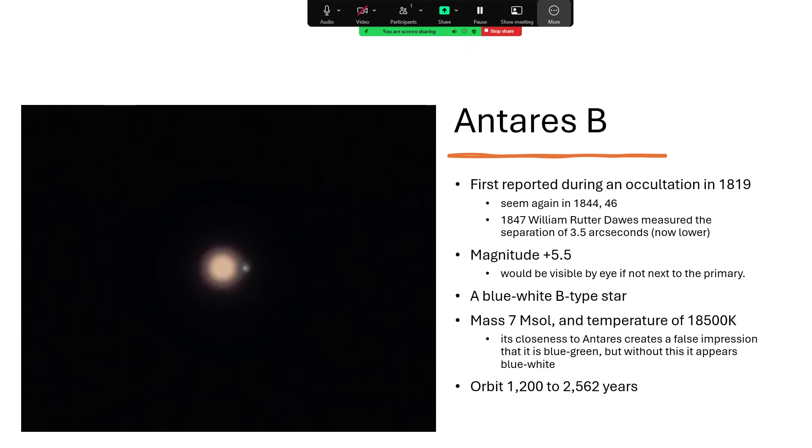And at that sort of level, you can understand why in just a couple of hundred years, it's quite difficult to pin down the orbital period. We think that the B star is around seven solar masses in its own right, so quite big, and with a temperature of 18,500, which you can tell from the spectrum of its light.